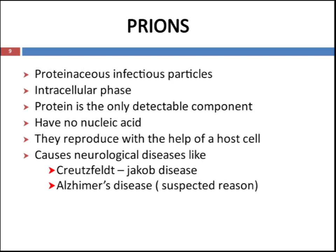The intracellular phase of virus is known as prions. These are proteinaceous infectious particles, and protein is the only detectable compound in prions — they do not have any nucleic acid. They reproduce with the help of host cells and can cause different neurological diseases like Creutzfeldt-Jakob disease and Alzheimer's disease.